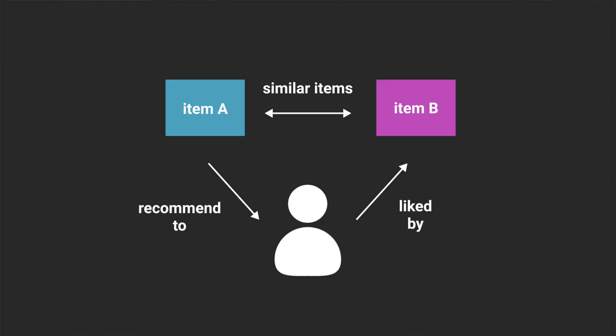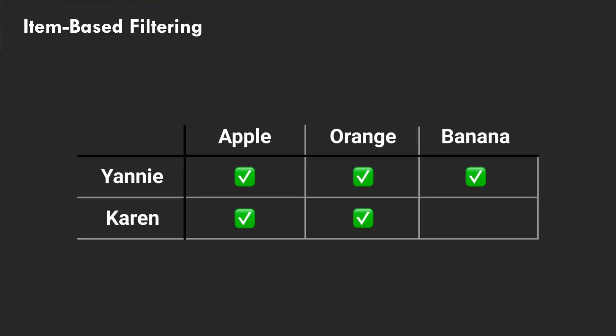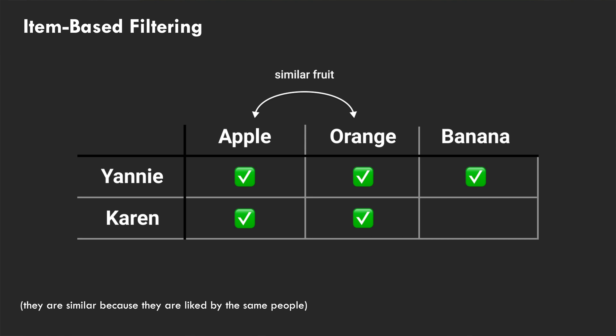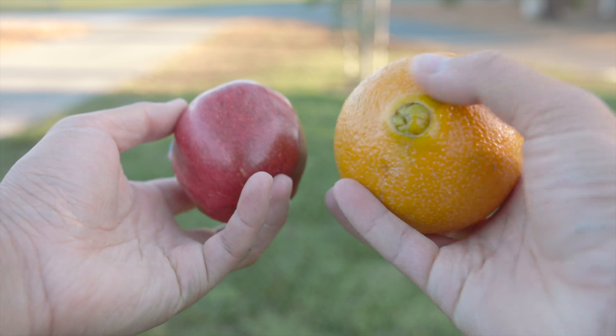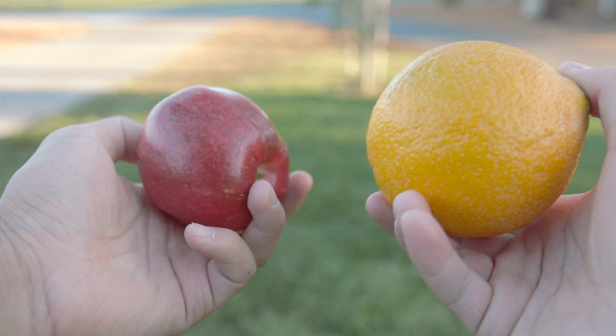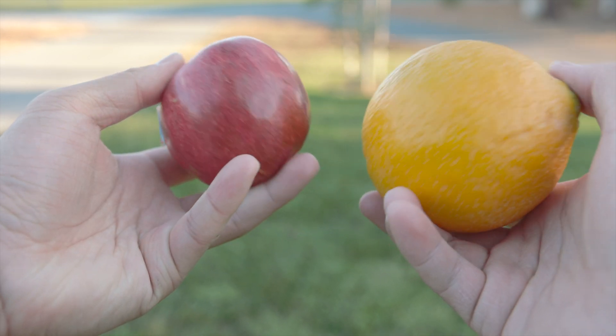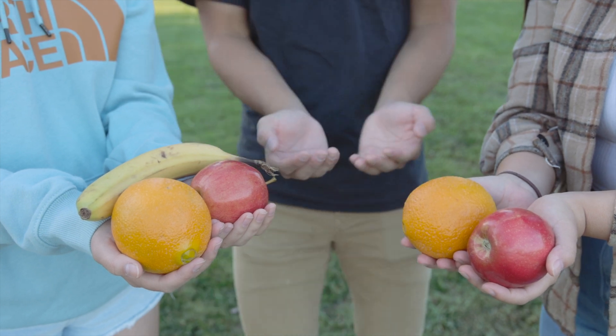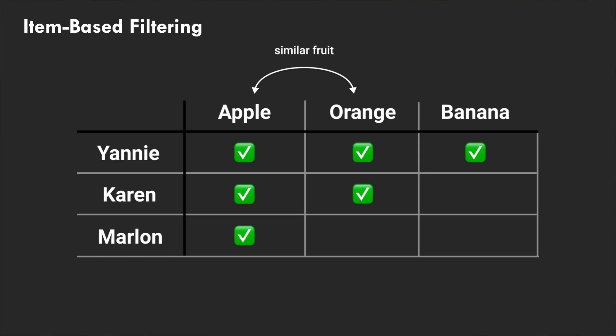Item-based filtering is a little different in that it looks at similarities between items rather than similarities between users. Going back to our example, since both Yanny and Karen like apples and oranges, using an item-based filtering algorithm means we can consider apples and oranges to be similar items, as long as enough people are interested in both fruits. We can then recommend apples to all who like oranges and oranges to all who like apples. So if I approached Yanny and Karen saying I only like apples, then with an item-based filtering algorithm, they would recommend me oranges.